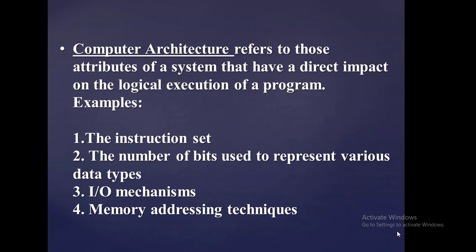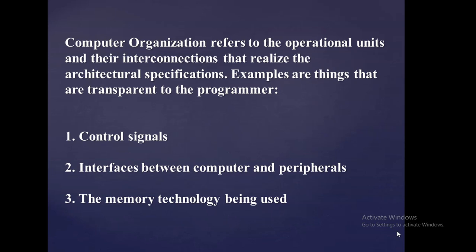Computer architecture refers to those attributes of a system that have a direct impact on the logical execution of a program. Examples of those architectural attributes include the instruction sets, the number of bits used to represent various data types, the input output mechanism, and the memory address techniques.